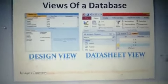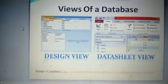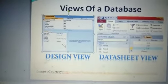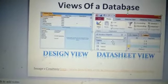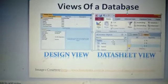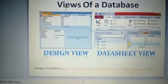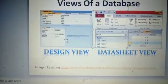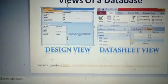Design View is basically used for the first time to write field names and allocate data types to fields. Datasheet View is used for record entry. Design View is only used for the first time; for the rest of the time Datasheet View is used. You only refer back to Design View rarely when you want to make a basic change to the design of your table.